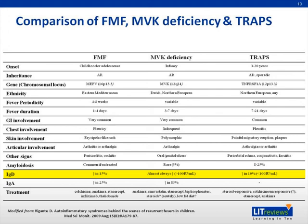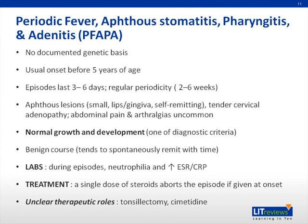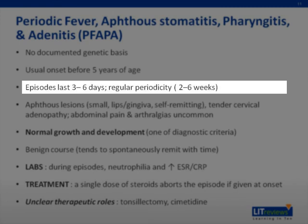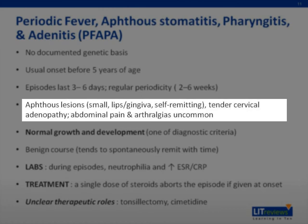I would like to spend more time on PFAPA — periodic fever, aphthous stomatitis, pharyngitis, and adenitis — because it is the only periodic recurrent fever syndrome with absolutely no identified genetic basis. It has some rather unique features. The usual onset is before five years of age. Episodes last typically three to six days with a quite regular periodicity of between two and six weeks. The main presenting symptoms are aphthous lesions — small lesions typically in the lips or gingiva that are self-remitting.